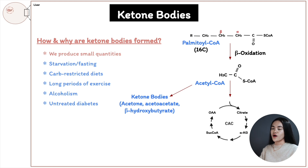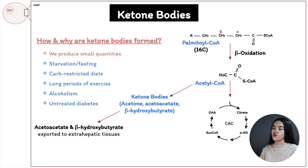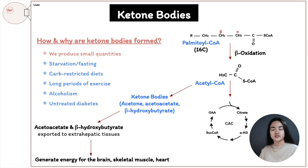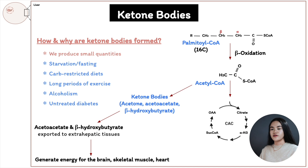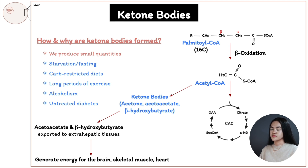Acetoacetate and beta-hydroxybutyrate are transported to extrahepatic tissues — skeletal muscle, heart muscle, and renal cortex — where they are converted to acetyl-CoA, which can then enter the citric acid cycle to generate energy. For the brain, its main source of energy is glucose, so when glucose is not available, it uses acetoacetate and beta-hydroxybutyrate to yield energy, because fatty acids can't cross the blood-brain barrier. So when glucose is unavailable, acetyl-CoA derived from fatty acid oxidation is turned into ketone bodies to provide energy for the brain, skeletal muscle, and heart muscle.